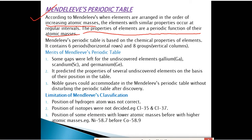Mendeleev's periodic table is based on the chemical properties of elements. It contains 6 periods and 8 groups. Elements were arranged on the basis of increasing atomic masses.